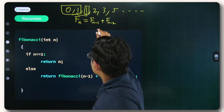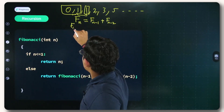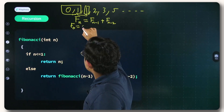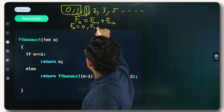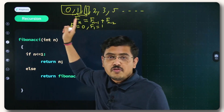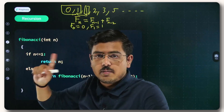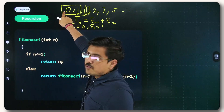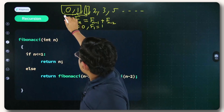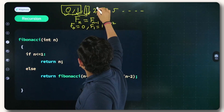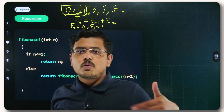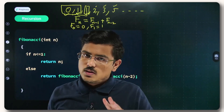The given condition is F(0) = 0 and F(1) = 1. Remember, 0 is the 0th term of the Fibonacci sequence in a standard Fibonacci sequence — not the first term. So this is the 0th term, this is 1st, this is 2nd, this is 3rd, this is 4th, this is 5th term. That is how you proceed with the Fibonacci sequence.